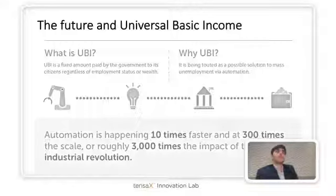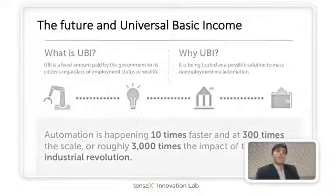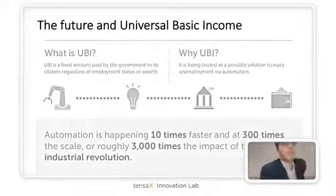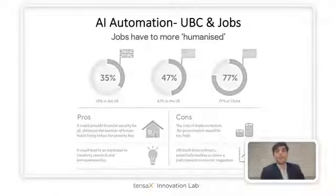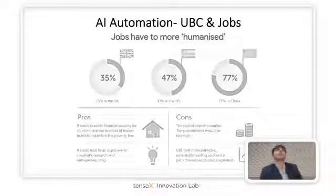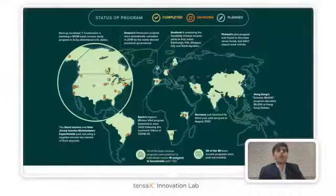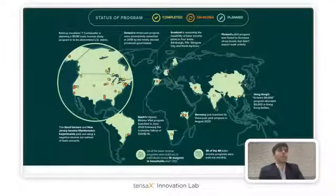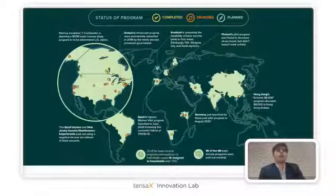AI is also going to bring about universal basic income, which means the jobs that are going to be restructured because of artificial intelligence will need to be given a set amount of income per month. Companies incorporating AI will be at the forefront of this. Universal basic income trials have been carried out internationally — even in India there was a trial in Madhya Pradesh — and many governments are testing how people respond to it.